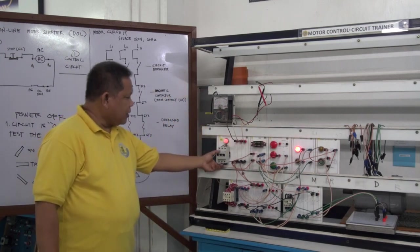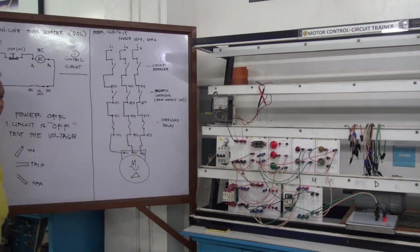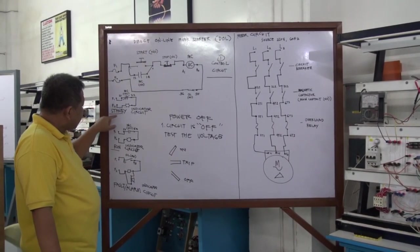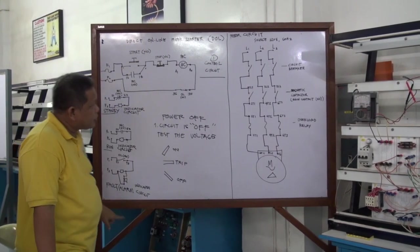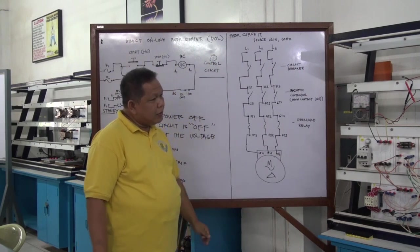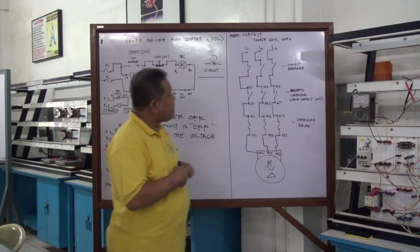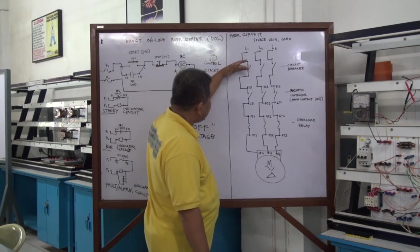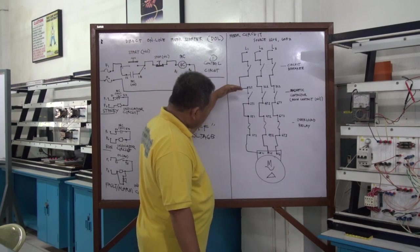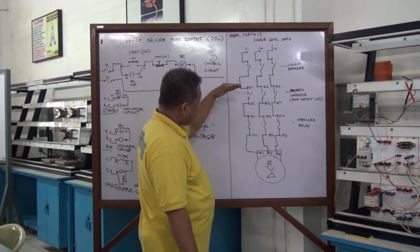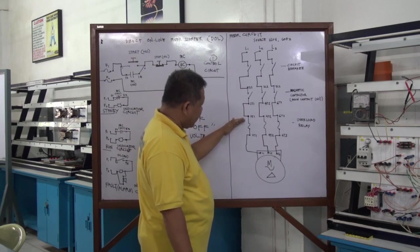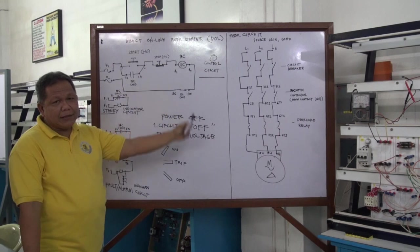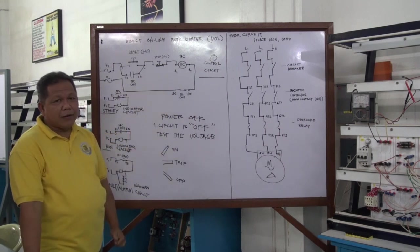Let's review our circuit. We have five circuits: the control circuit, the run indicator circuit, the standby circuit, the default alarm circuit, and the motor circuit. In the motor circuit, the connection goes in sequence from the source to the circuit breaker, from the circuit breaker to the magnetic contactor main contacts, from the magnetic contactor to the overload relay, and from the overload relay to the motor. We have completed the reconstruction of our motor control circuit.